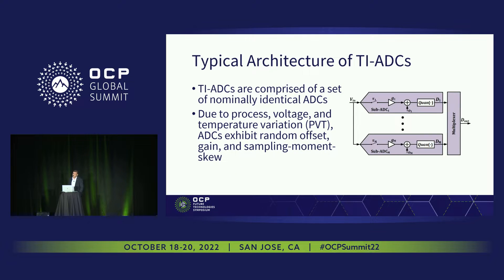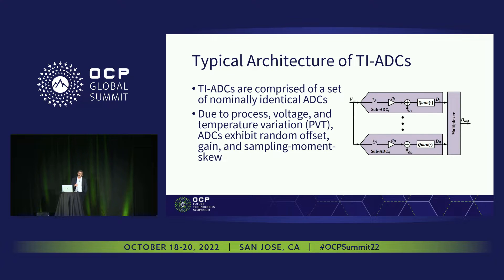Time-interleaved ADCs are made of several parallel track-and-holds and quantizers to achieve an effective sampling rate that is N times the individual slice sampling rate. But due to process variation and temperature variation, the ADC exhibits several deficiencies like gain errors, offset error, and sampling moment skews.